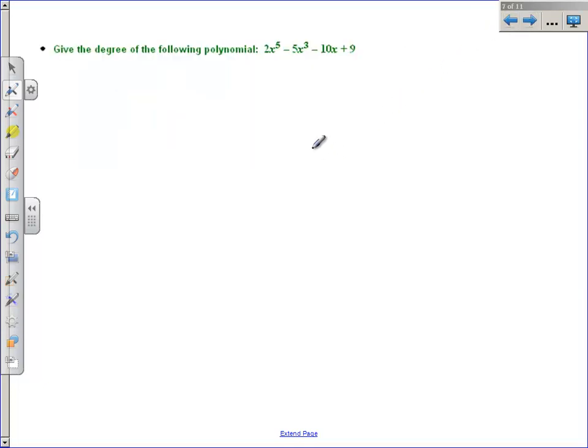Okay. So let's take a look at a couple of examples. Give the degree of the following polynomial. I've got 2x^5 - 5x³ - 10x + 9. You are going to look at all the exponents and look at the biggest number you see. The biggest number you see here is a 5. This is a 5th degree or quintic polynomial.